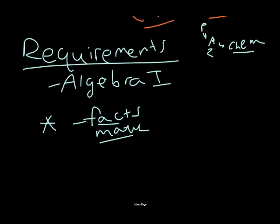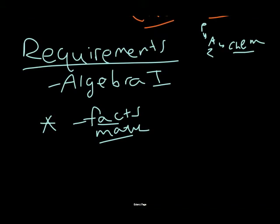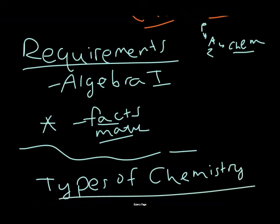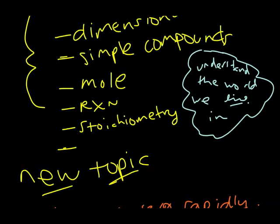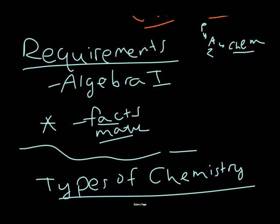Alright, so that has been the first part. In the second, part two, we're going to learn the types of chemistry and how scientists study certain types of chemistry. Okay, we're going to learn about the five types of chemistry and just learn a little bit about what each type does. That'll be pretty fun. See you guys later.